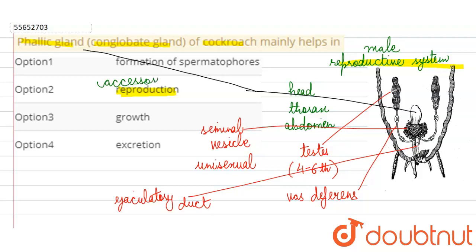in the cockroach's reproductive system. The main testes produce the sperm. It's not involved in growth and excretion. It's an accessory reproductive gland. The formation of spermatophores will be our correct answer.